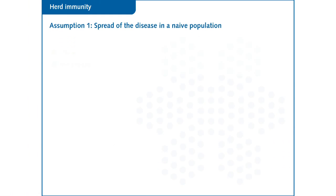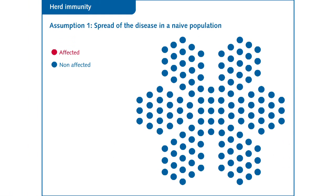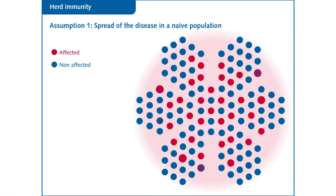In the absence of vaccination, let's observe the progression of a disease in a naive population, meaning a population that has never been exposed to a disease-causing pathogen or vaccine. The red zone represents the spread of the disease. Infected individuals are shown in red. The characteristics of the spread of every pathogen, virus or bacteria are unique.